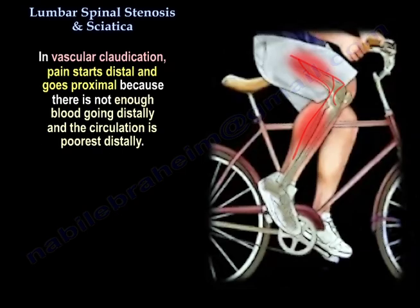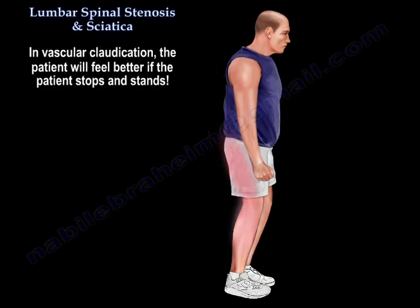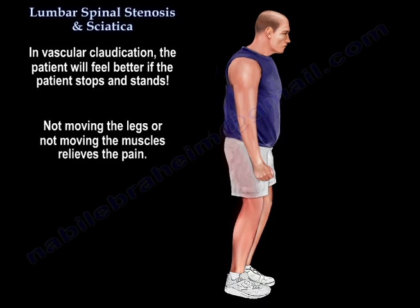In vascular claudication, pain starts distally and goes proximally because there is not enough blood going distally and the circulation is poorest distally. The reverse occurs in spinal stenosis, where the pain starts proximally and goes distally. In vascular claudication, the patient will feel better if they stop and stand, as not moving the muscles relieves the pain.